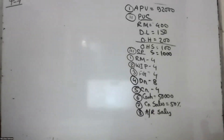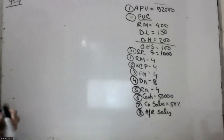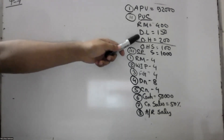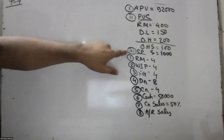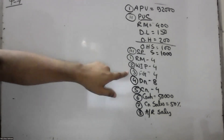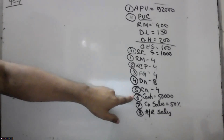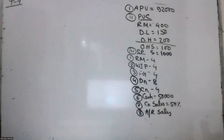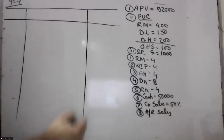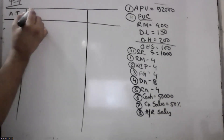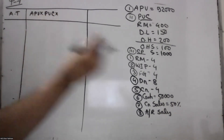Here the statement is APU — per unit cost, PUC. The statement is PUC — per unit cost. The price of 1,000, 1,500. Account title: APU, PUC, and CP.